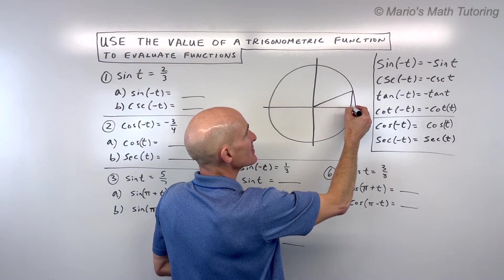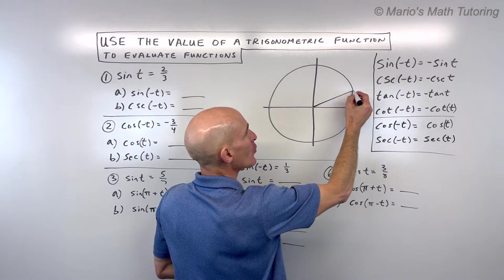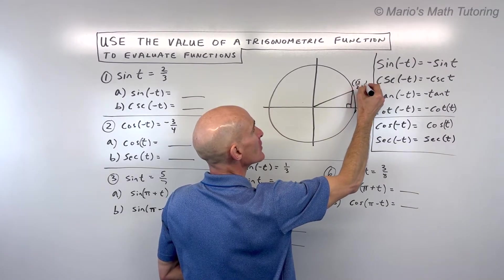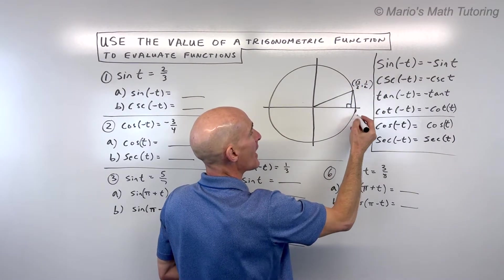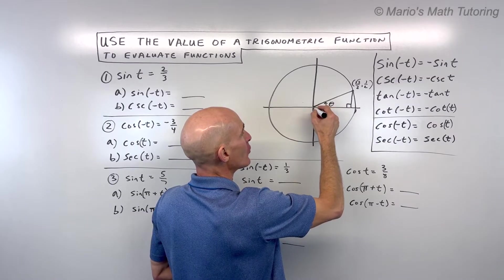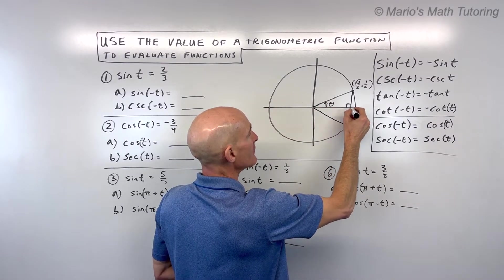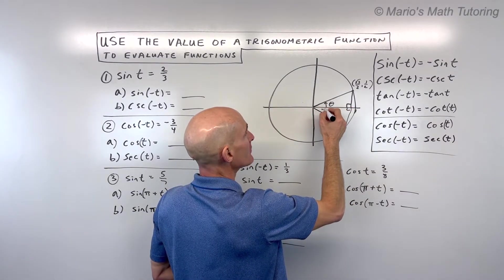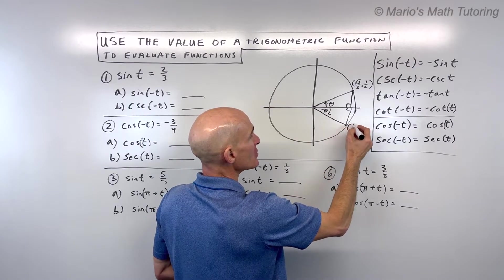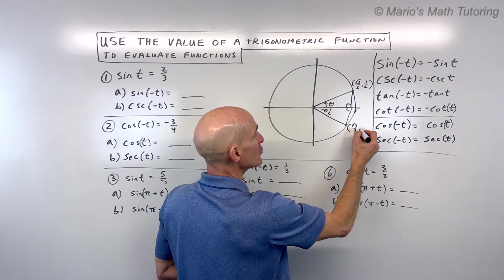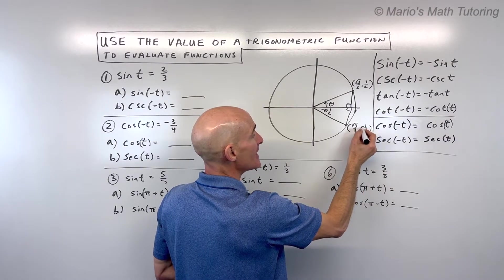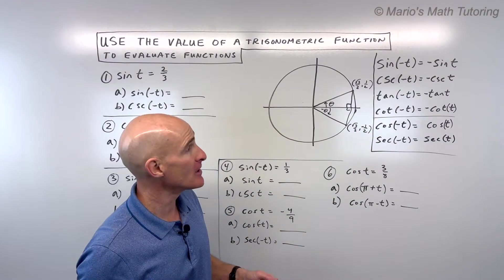One way to understand this is to go to your unit circle and look at 30 degrees. The coordinates on the unit circle at 30 degrees are square root 3 over 2, comma 1 half. That's a positive angle. Now if you go clockwise, that's a negative angle — negative theta. That point is also going to be root 3 over 2, but the y value is negative: negative 1 half.